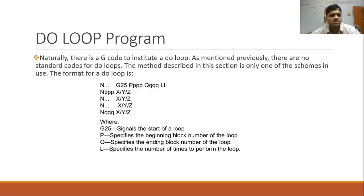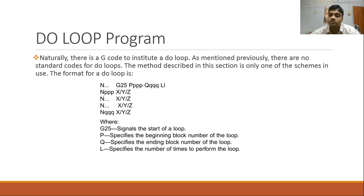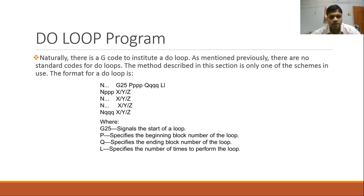The do loop has the initialization, the increment — which by default increments — and a termination condition. All these required things are present in do loop the same way we express them in any programming language. This is the beauty of these loops: they reduce the length of programs, and that is what they do in CNC programming as well.